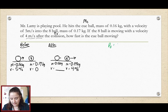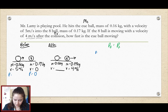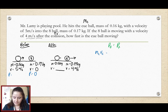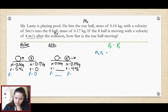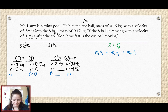Now we have our picture — let's work on our equation. We know we have P-naught equals P-final. Before the collision, the eight ball has no momentum, so its initial momentum is zero, but the cue ball does. So we calculate that momentum as the mass of the cue ball times the velocity of the cue ball before the collision. After the collision, they both have momentum. We calculate it as: mass of the cue ball times velocity of the cue ball after the collision, plus the mass of the eight ball times the velocity of the eight ball after the collision.